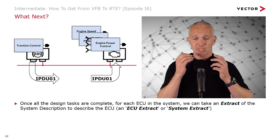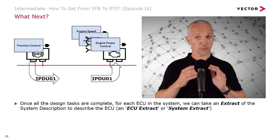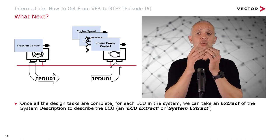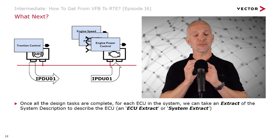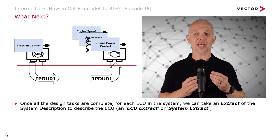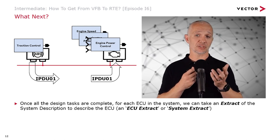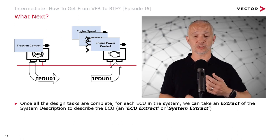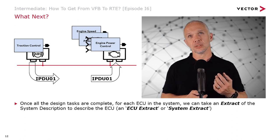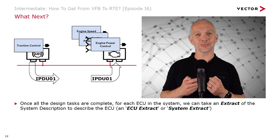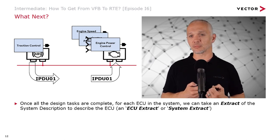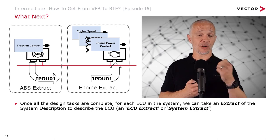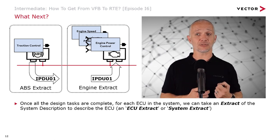Once we've captured our internal behavior — and it goes beyond what we've just talked about, we're only giving a summary in this series — once we've done all our design tasks for every ECU in the system, we can take an extract of the system description to describe an ECU: an ECU extract or system extract. These two terms aren't supposed to be interchangeable but are often used interchangeably. So we take an ABS extract for our ABS ECU and an engine extract for our engine ECU.